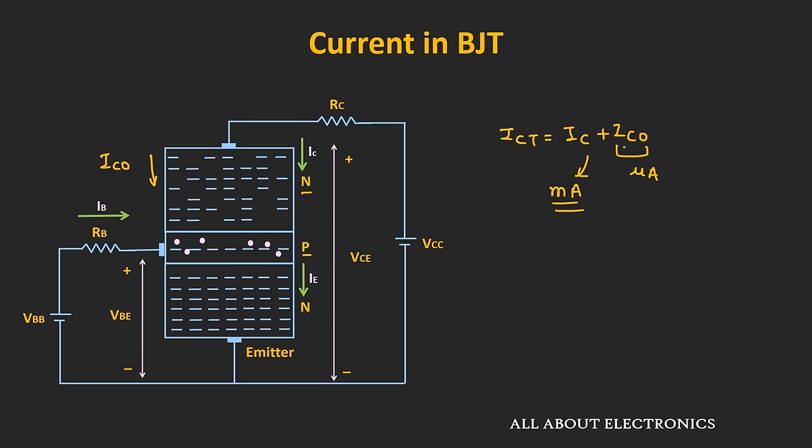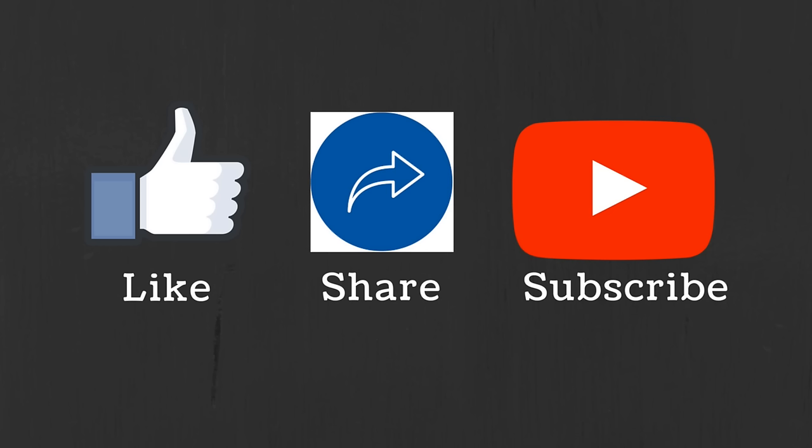In the upcoming videos, we will see the different configurations of the BJT as well as the input and output characteristics, and how the BJT can be biased using different techniques. I hope in this video you got a brief overview of the BJT. If you have any questions or suggestions, let me know in the comment section below. If you like this video, hit the like button and subscribe to the channel for more such videos.